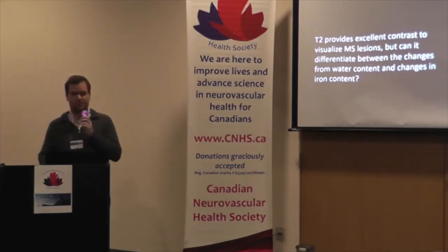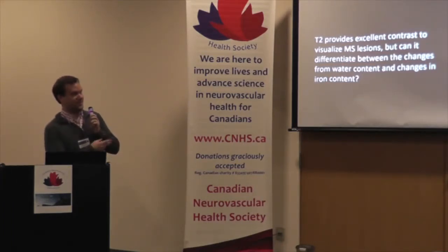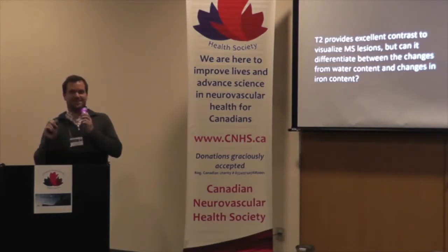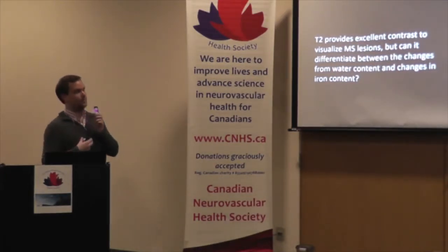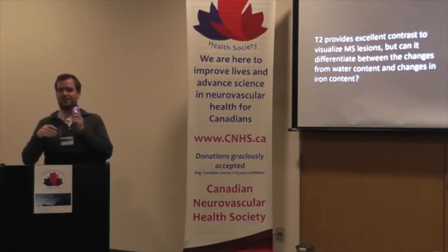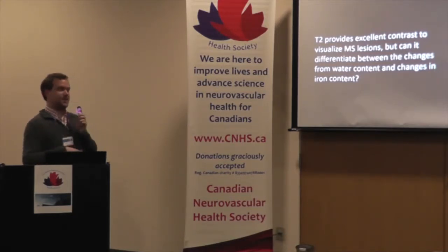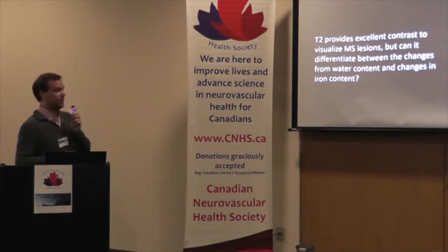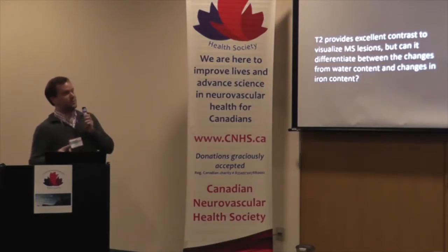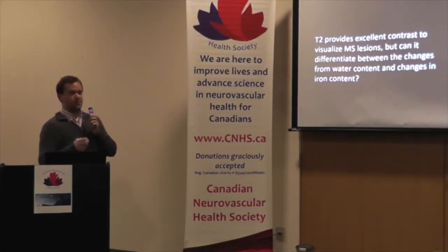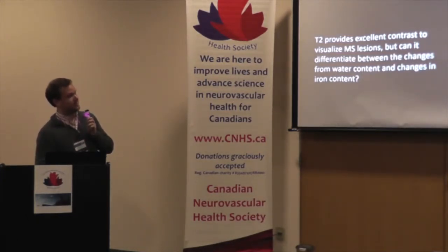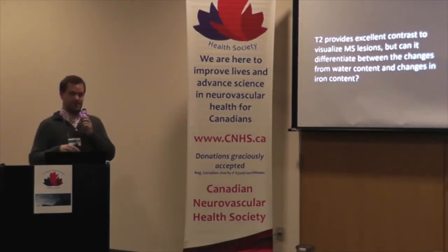Looking at a T2-FLAIR image, recalling the earlier presentation, you may have noticed that lesions that exploded like fireworks over a year appeared and then disappeared quite quickly, while a pair of periventricular lesions remained static. When a lesion remains chronic and stable, it's most likely scar tissue. When a very acute lesion appears brightly and then disappears, this is likely an acute inflammation response. What we really want to determine is whether we can distinguish between water content changes and changes in iron.